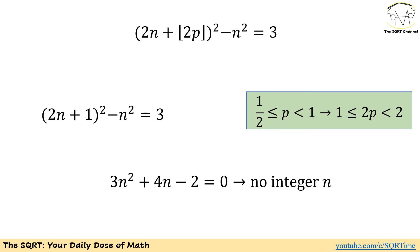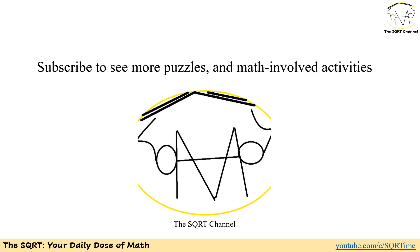The only solutions are the ones we discussed: x equals 0, and x in the range (1, 3/2) or (negative 1, negative 1/2). Thanks for watching the video. If you would like to see more puzzles and problems from math competitions and Olympiads, please kindly subscribe to this channel. This is the SQRT channel, and I hope to see you in the next video.